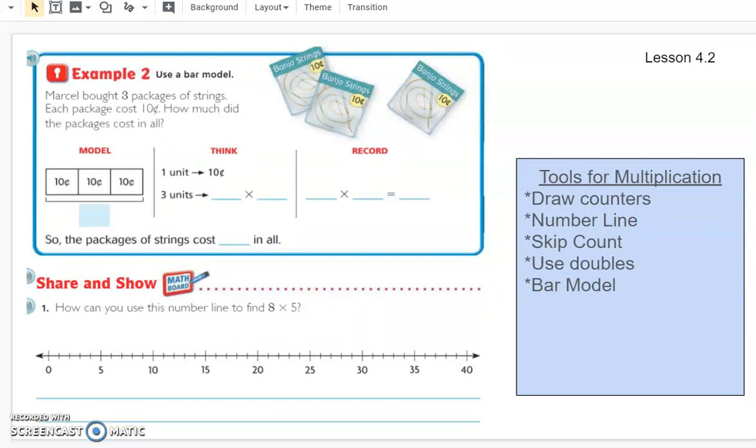Okay, so now we're ready to go on to our next problem. And for our next problem, we're going to be using a different strategy now. I've added that over here to our tool belt, our tools for multiplication. We're going to be using a bar model. This is just another way of looking at your equal groups and then the numbers to go in each group. So we're back to Marcel, and he is now buying packages of string for his banjo. So Marcel bought three packages of string. You can see them right here. Each package costs 10 cents. How much did the packages cost in all?